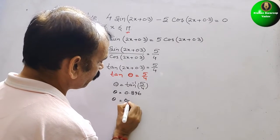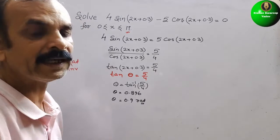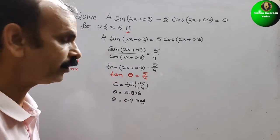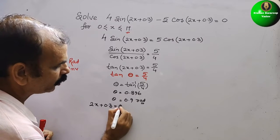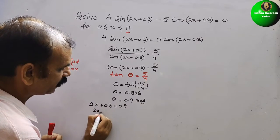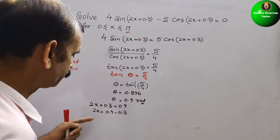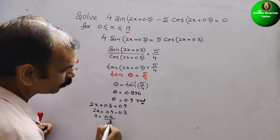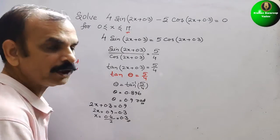So theta = 0.9 radians. Since theta is 2x + 0.3, we write: 2x + 0.3 = 0.9. Bringing 0.3 to the right side: 2x = 0.9 − 0.3 = 0.6, so x = 0.6/2 = 0.3. The first solution is x = 0.3.